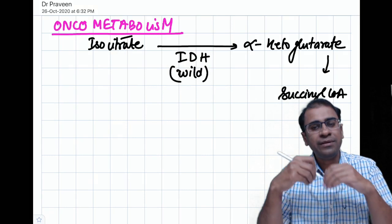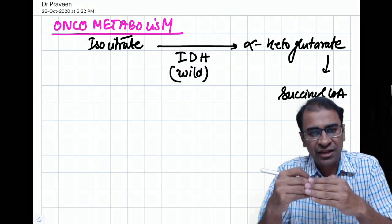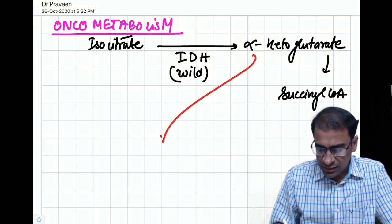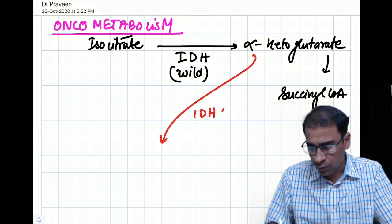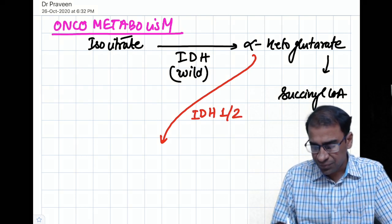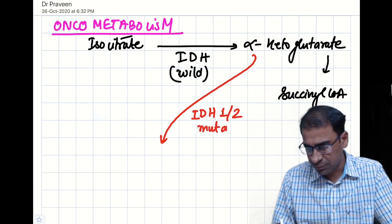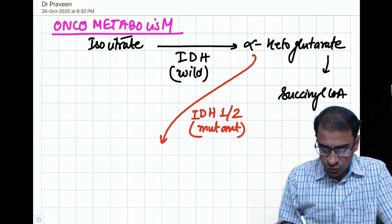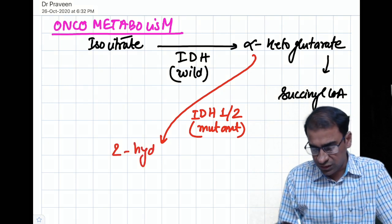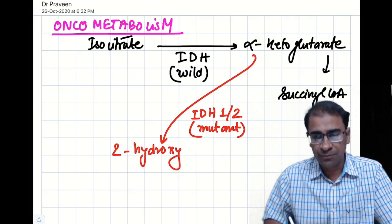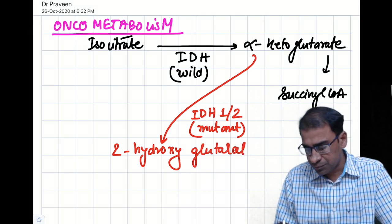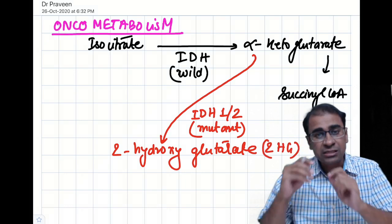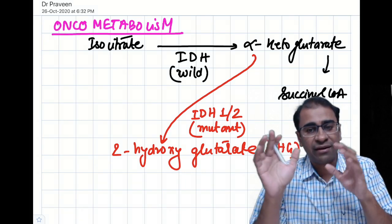What happens sometimes is this isocitrate dehydrogenase has a mutation. Alpha-ketoglutarate, upon action by the mutant form of IDH1 or IDH2, converts to something called 2-hydroxyglutarate. This is referred to as 2-HG and becomes an oncometabolite. I'll tell you why and how.